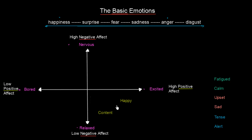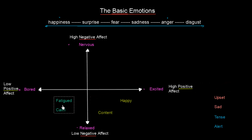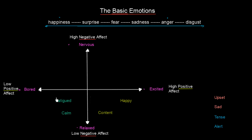Next we have fatigued and calm. You are calm when there is no high effect on you — no high negative, no high positive. So these two go into the low-positive/low-negative segment. Calm is placed close to relaxed, and fatigued is placed just next to bored, which really makes sense.